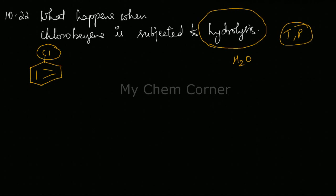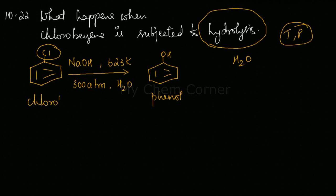So here, the reagents required are NaOH at 623 Kelvin, 300 atm pressure, and water. When you do all this, your chlorobenzene will get converted to OH, which is phenol. So you're converting chlorobenzene to phenol.